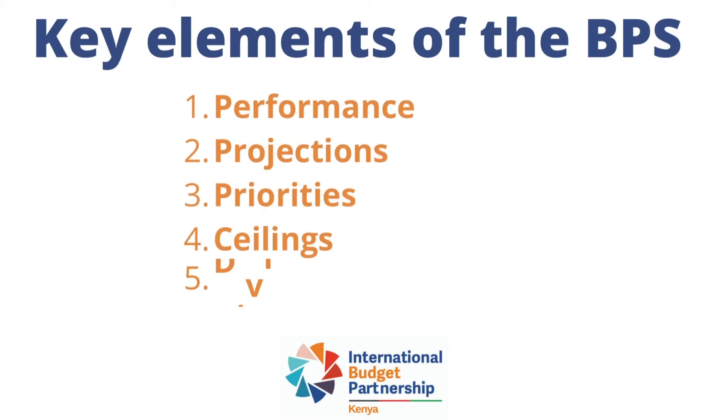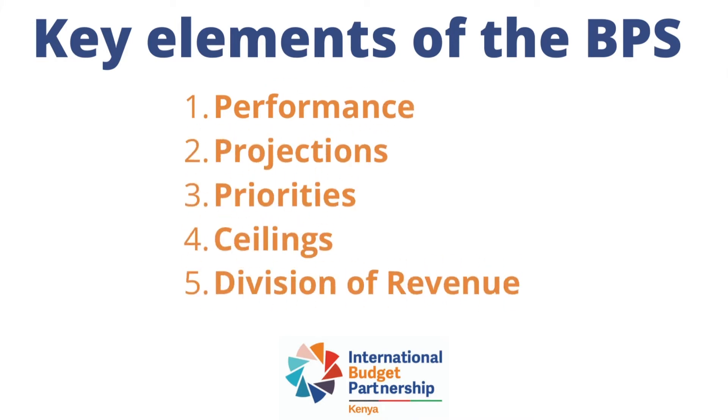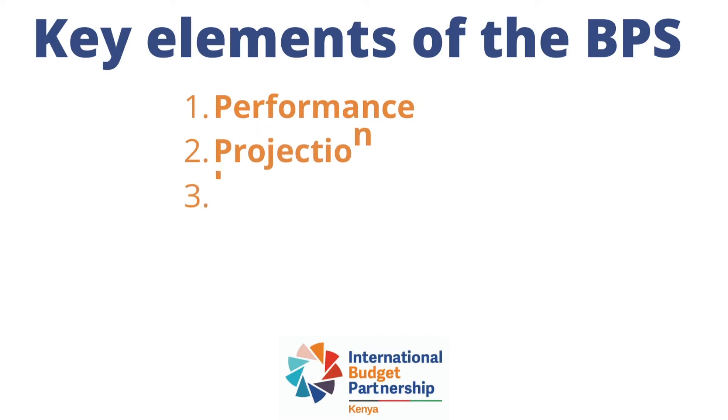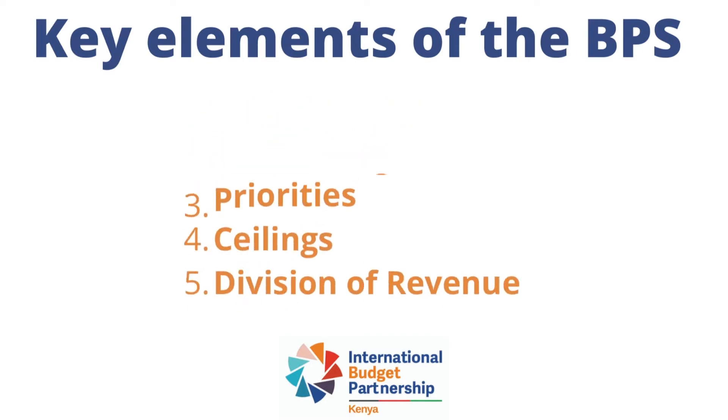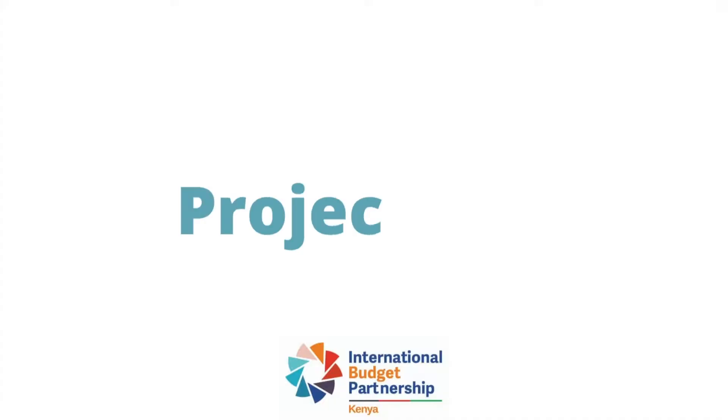The BPS has several elements, but we will focus on five of these elements. Let's look at performance, which relates to budget performance for the previous year and the first six months of the current financial year. Performance data informs what is realistic going forward and helps us to ask questions such as: are our revenue estimates realistic? Or, if we give more money to a certain sector, can they actually spend it?